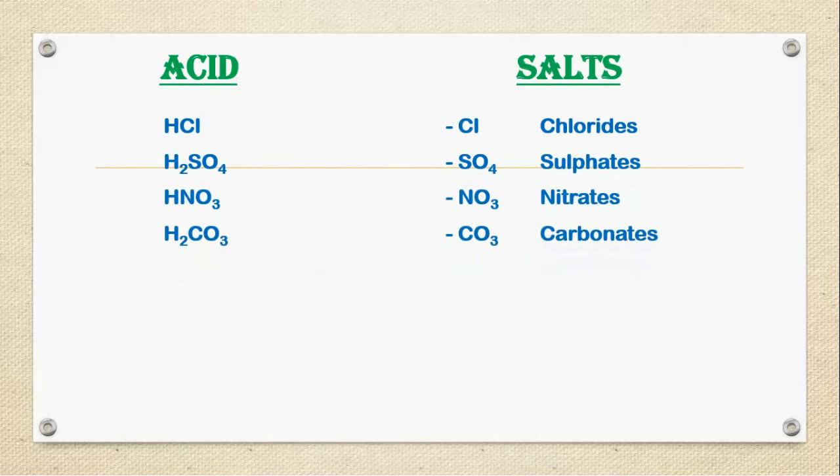So salts depend on acids. Salt formed by HCl is chloride. Salt formed by sulfuric acid is sulfates. Salt formed by nitric acid is nitrates. Salt formed by carbonic acid is carbonate.